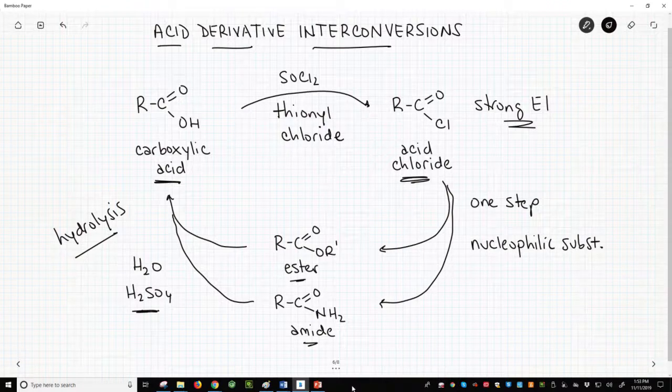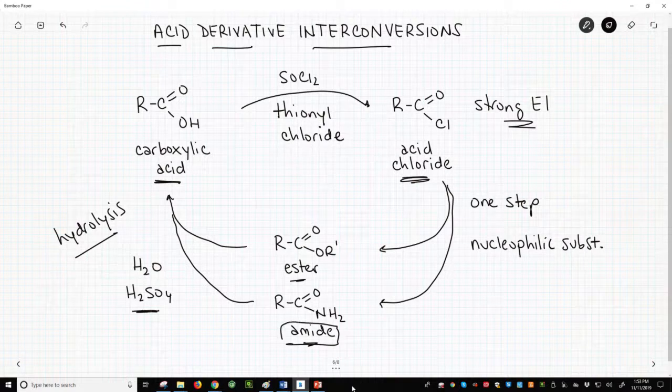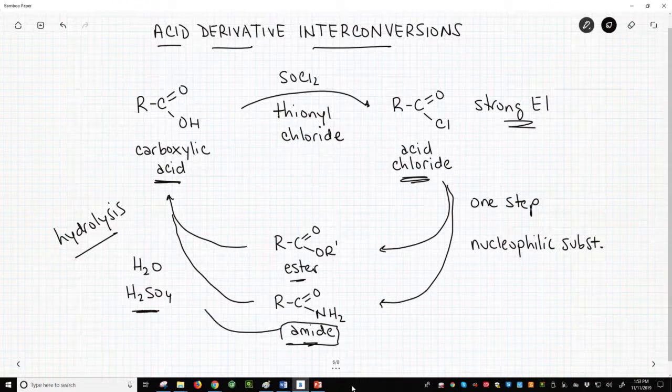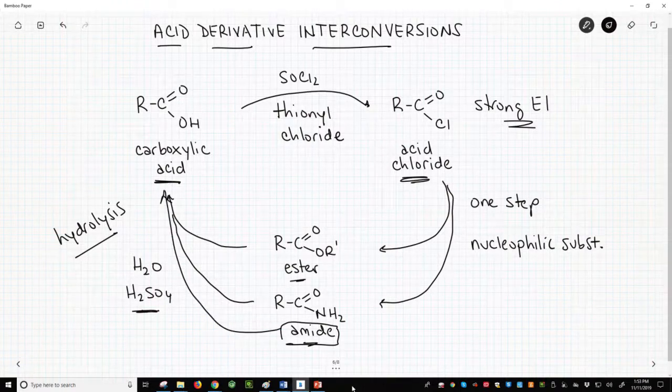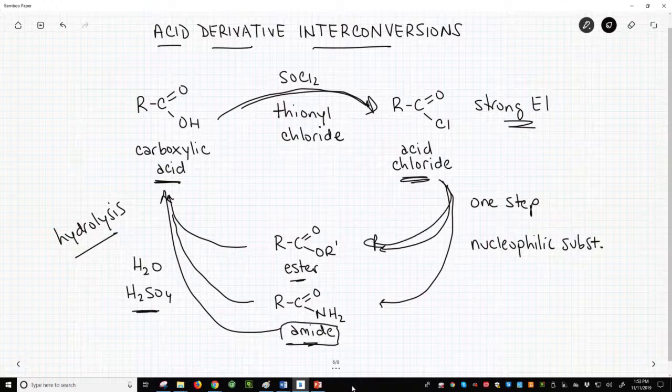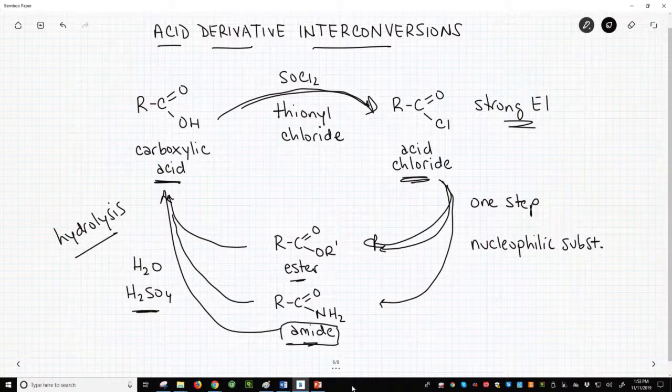For example, if you had an amide, start with an amide, and you wanted to make an ester, you would typically hydrolyze the amide to the carboxylic acid, convert the acid to an acid chloride, and then form the ester in one step through a nucleophilic substitution.